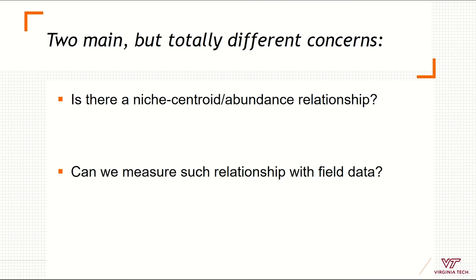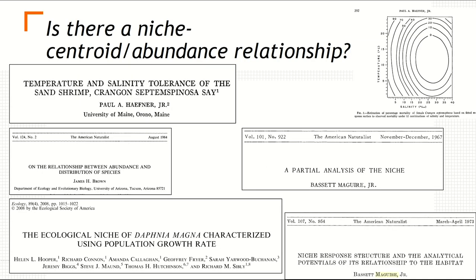The first question is whether there is a relationship between the distance to the niche centroid and demography of species — for example, abundance. The second question is whether we can actually measure that relationship using field data. To explore the first question, we found that a series of studies with controlled conditions found strong support for the relationship between distance to the niche centroid and performance of species in terms of abundance or mortality. We believe these studies provide robust evidence to support the niche centroid hypothesis.